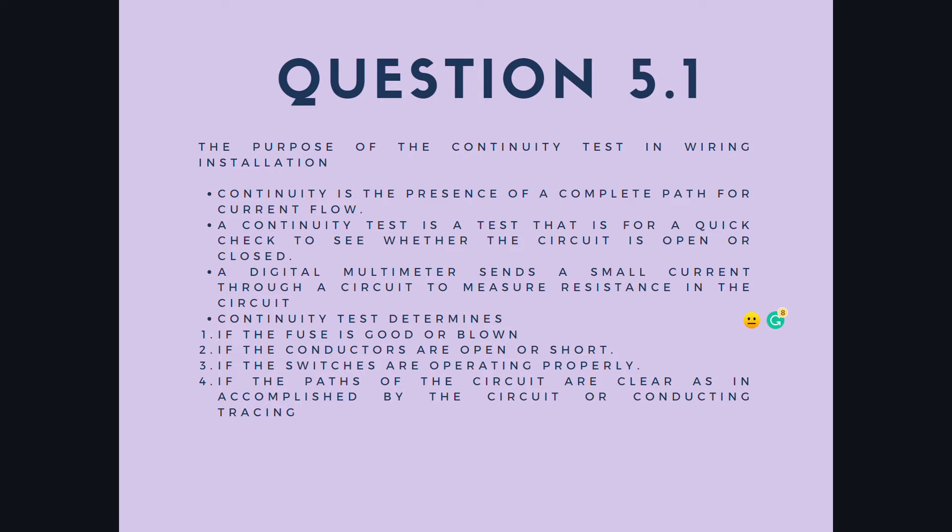For question 5.1, the purpose of the continuity test in wiring installation. Continuity is the presence of a complete path for current flow. A continuity test is a quick check to see whether the circuit is open or closed. A digital multimeter sends a small current through a circuit to measure resistance in the circuit.